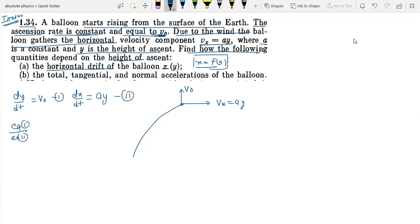We will get dy by dx, because if we divide, then t will cancel out. This is equal to v0 by ay. So dx will be equal to a by v0 into y dy. Integrating this gives us x equals a by 2v0 times y squared. This is the drift x as a function of y.